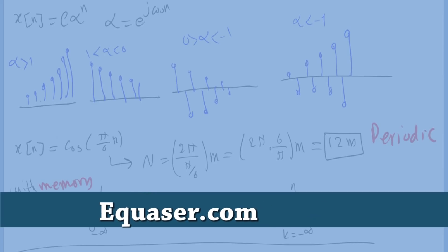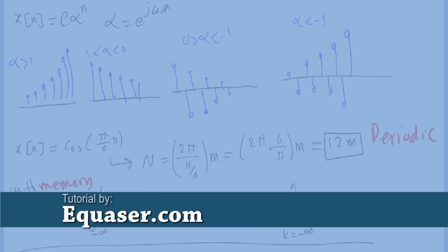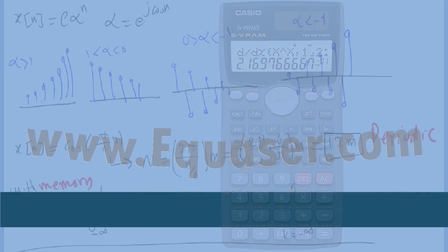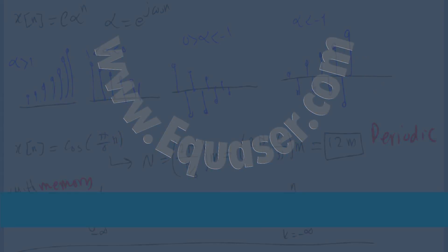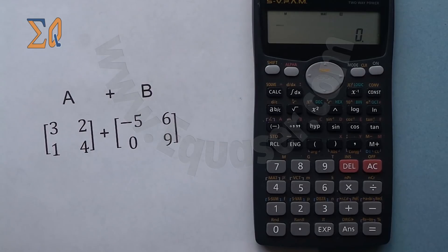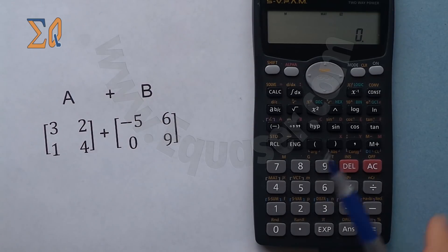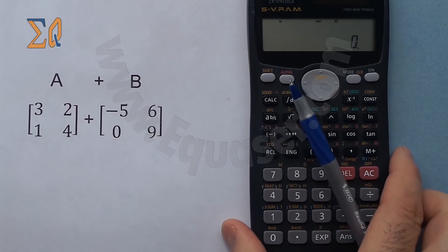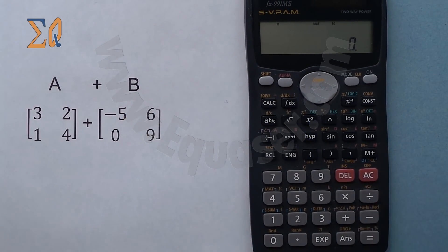Welcome to a tutorial from Equazor.com. In this tutorial we're going to use the Casio FX991MS to work with matrices. This calculator, even though it has been on the market for a long time, is one of the best calculators available.